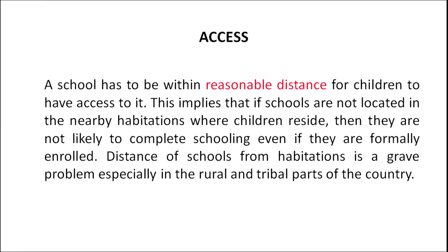A school has to be within a reasonable distance for the children to have access to it. This implies that if schools are not located in the nearby habitation where children reside, then they are not likely to complete schooling even if they are formally enrolled. The distance of schools from the habitation is a great and grave problem, especially in the rural and tribal parts of the country. The most important essential elements are three important factors: the first is access, the second is equity, and the third is quality.